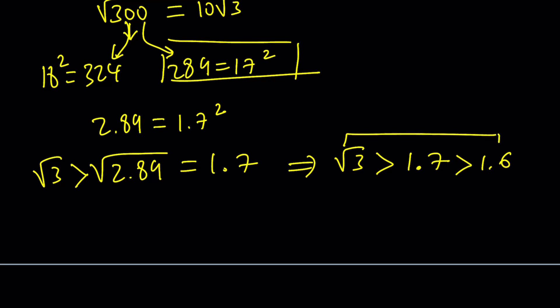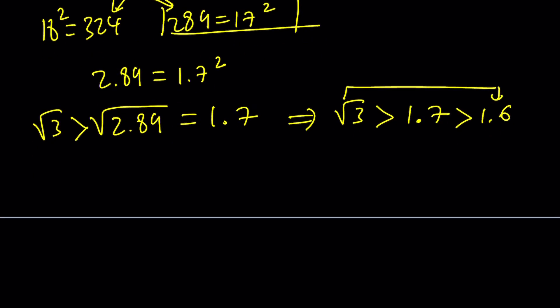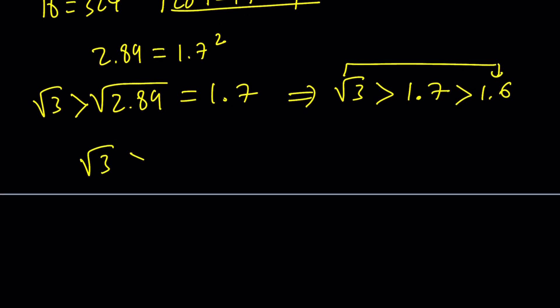So, again, by using the transitive property, it just follows. Make sense? Okay, cool. So, this basically shows that square root of 3 is greater than 8 over 5, which I wrote as 1.6.